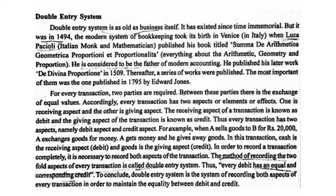Transaction has two aspects or two elements. One is the receiving aspect and the other is the giving aspect. The receiving aspect of a transaction is debit, and the giving aspect is credit. Every transaction has two aspects: debit aspect and credit aspect.